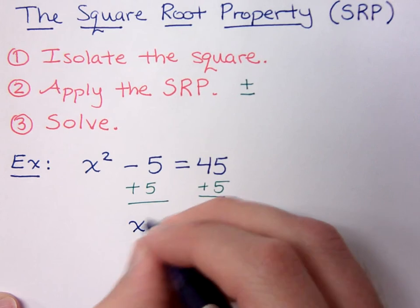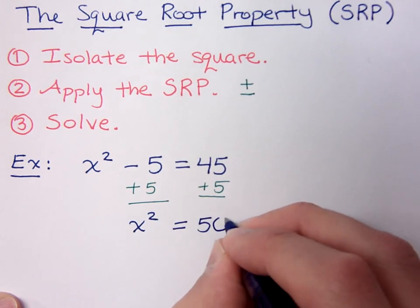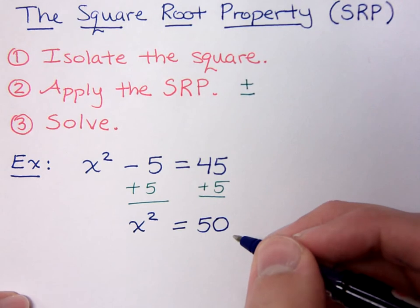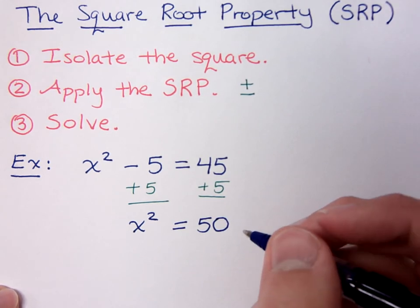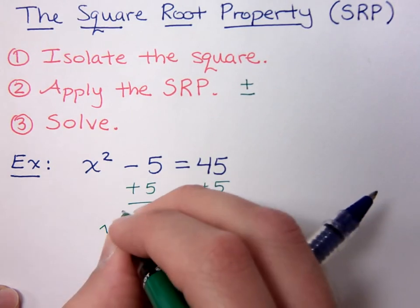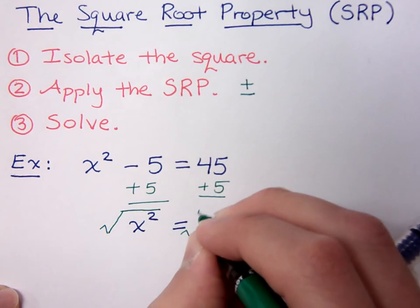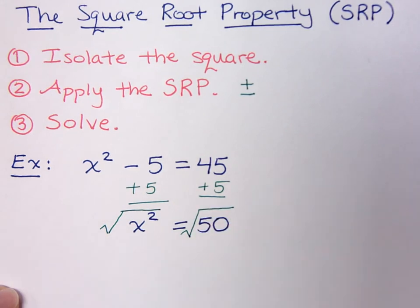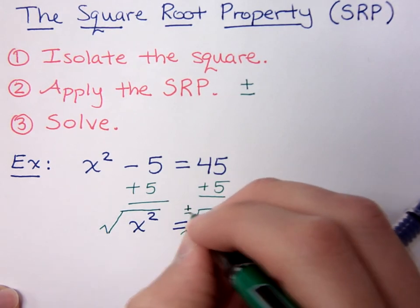So now we have x squared equals 50. And now this is where we want to apply the square root property. When we apply the square root property, we are doing this. We are taking the square root of both the left and the right side of the equation. Now remember, when you take the square root, you have to do your plus or minus.